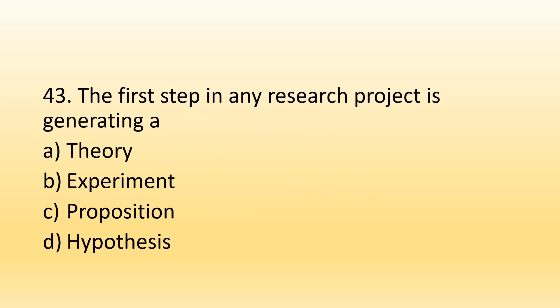Number 43. The first step in any research project is generating a: Option A, Theory; Option B, Experiment; Option C, Proposition; Option D, Hypothesis. The right option is Option C, Proposition. A proposition is a suggestion that two concepts have a link or association between them, not yet evidenced in existing literature. Propositions are often drawn when a person assumes a relationship between two concepts.